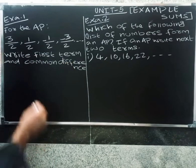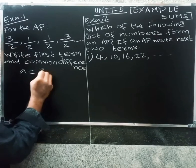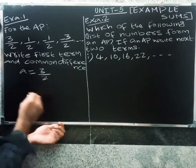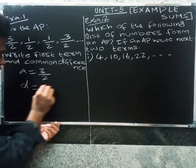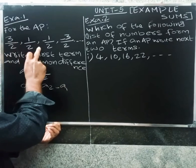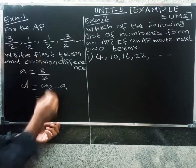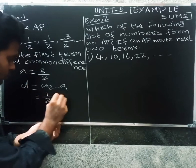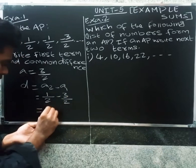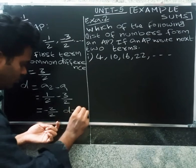So the first term is A, so A equal to 3 by 2. What is the common difference? D equal to A2 minus A1. So A1, A2, A3, A4 — A2 minus A1 equal to 1 by 2 minus 3 by 2. The difference is minus 2 by 2, so the common difference D equal to minus 1.